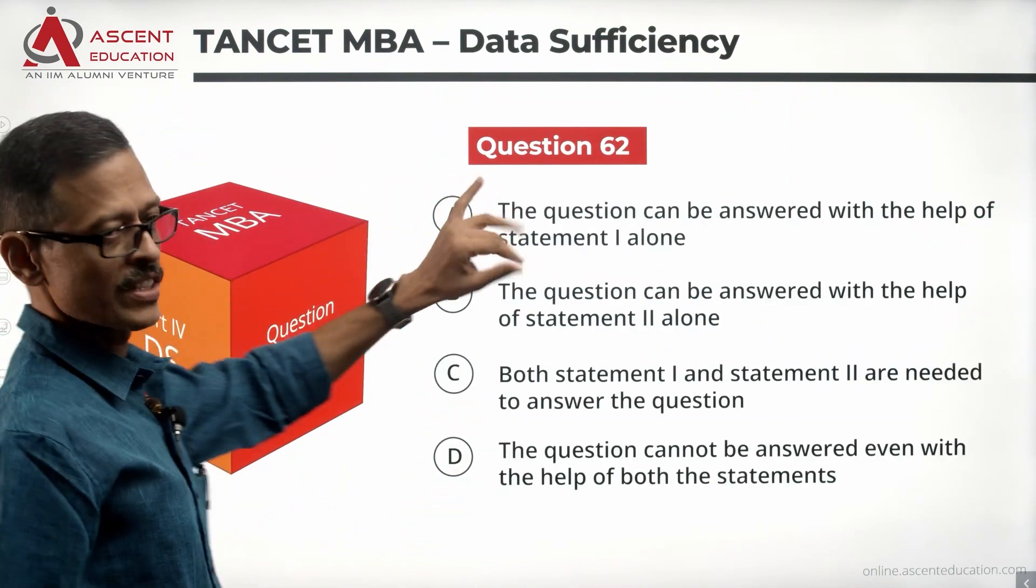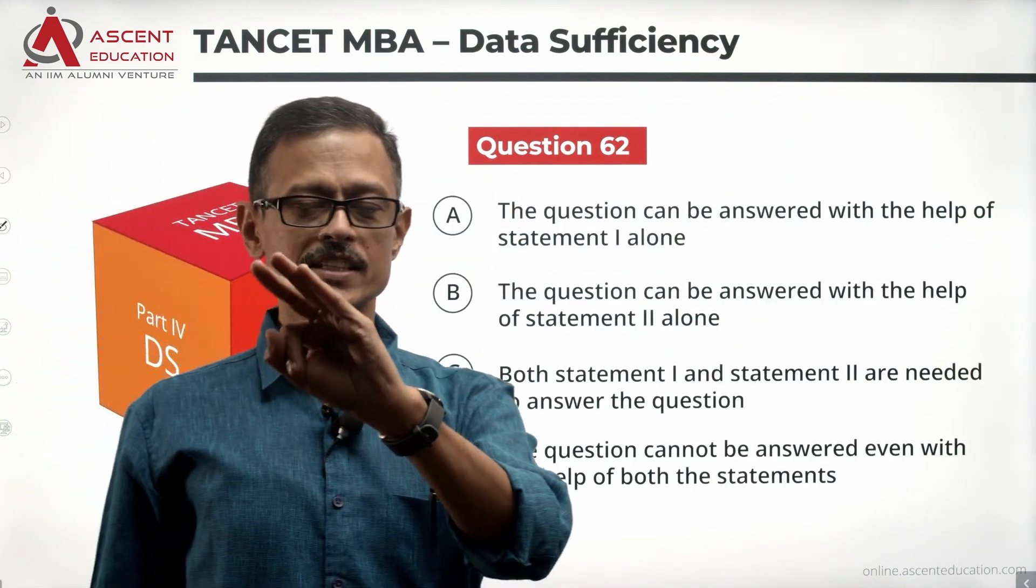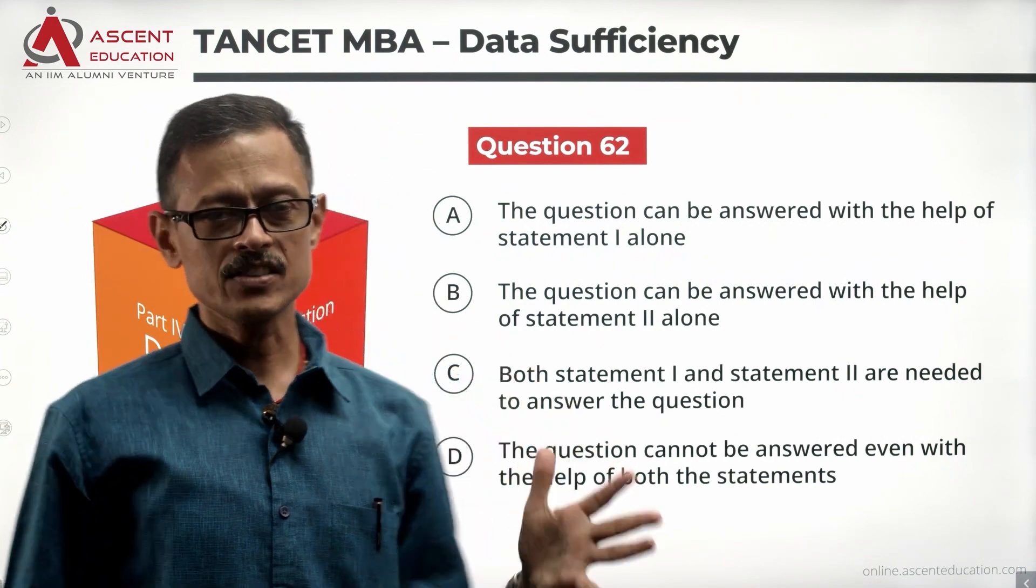From the statements, we know the answer options: A is statement 1 alone sufficient, B is statement 2 alone sufficient, C is both statements together needed, and D is the given data is not sufficient.